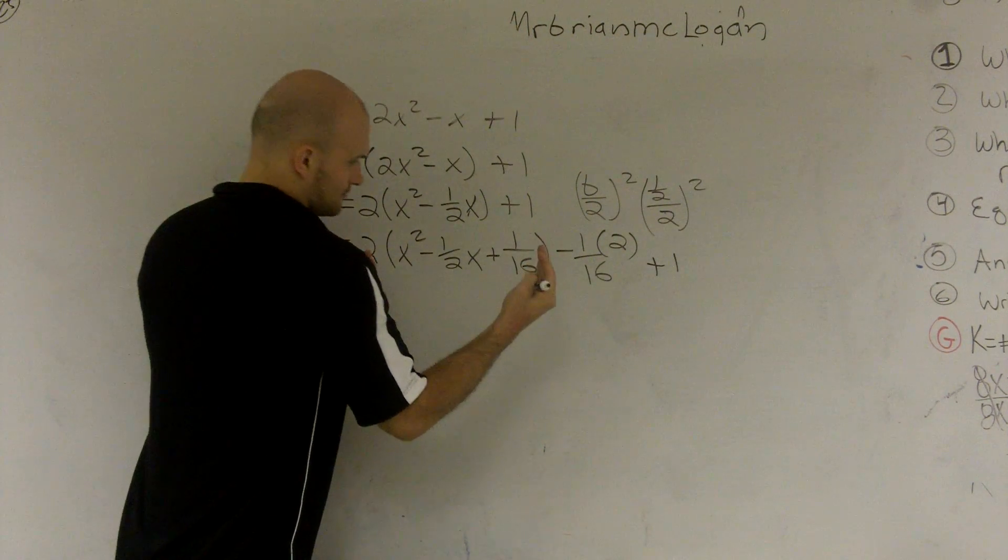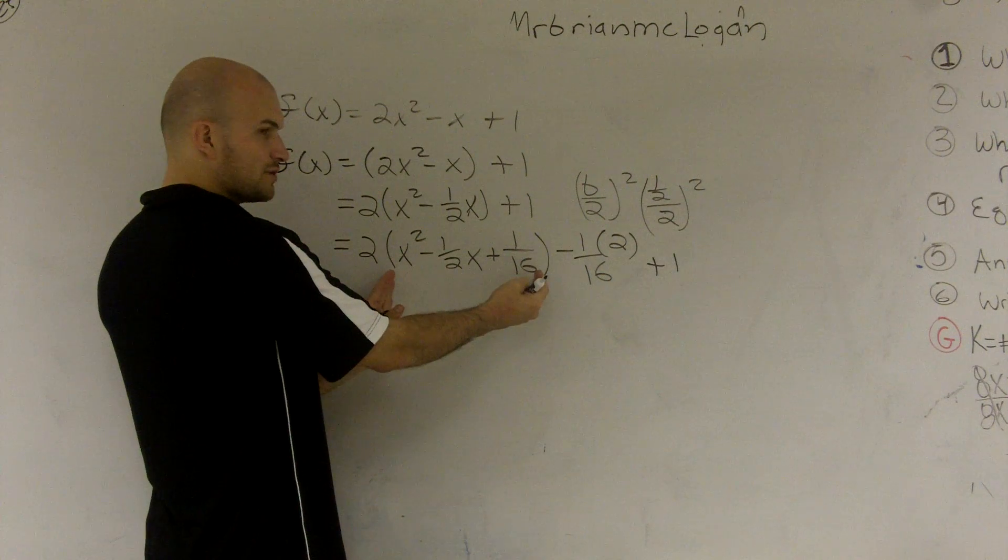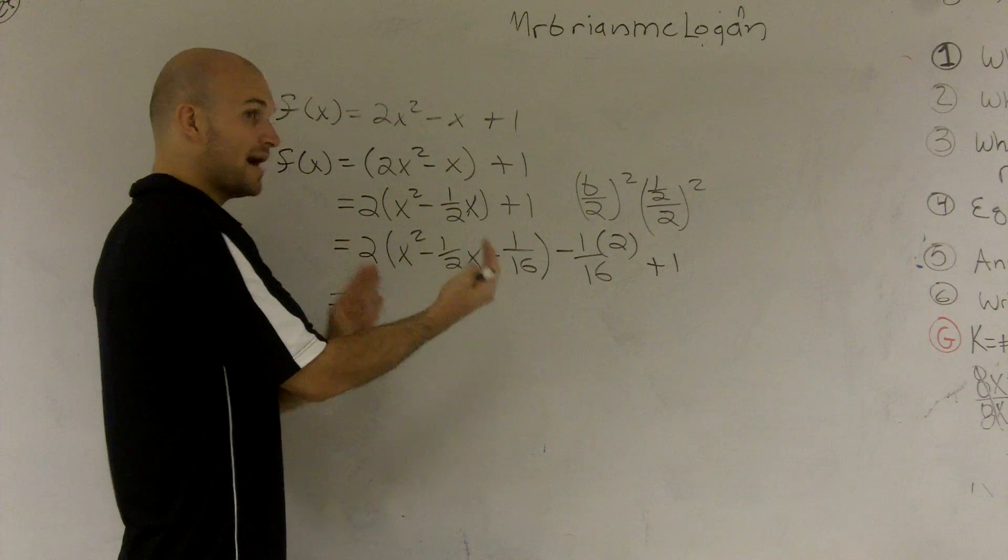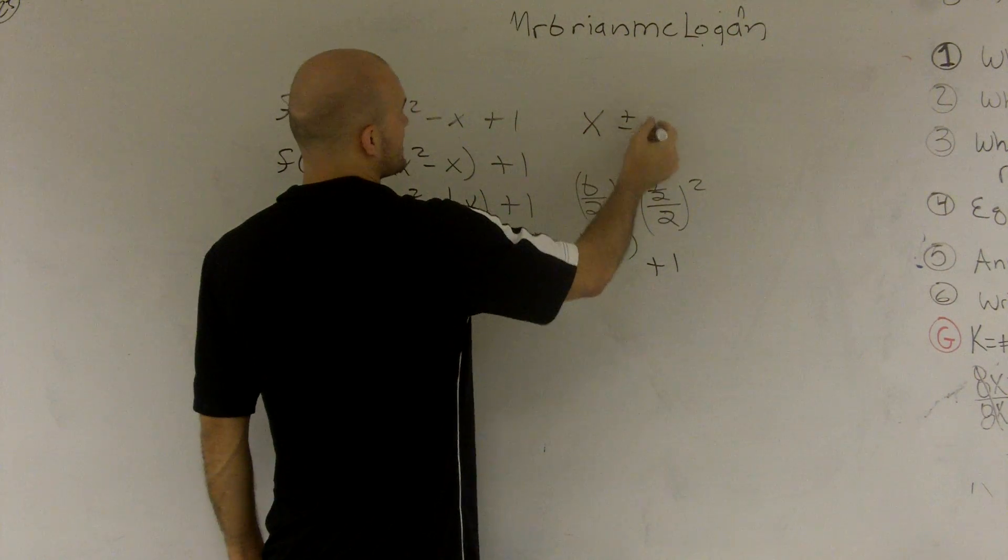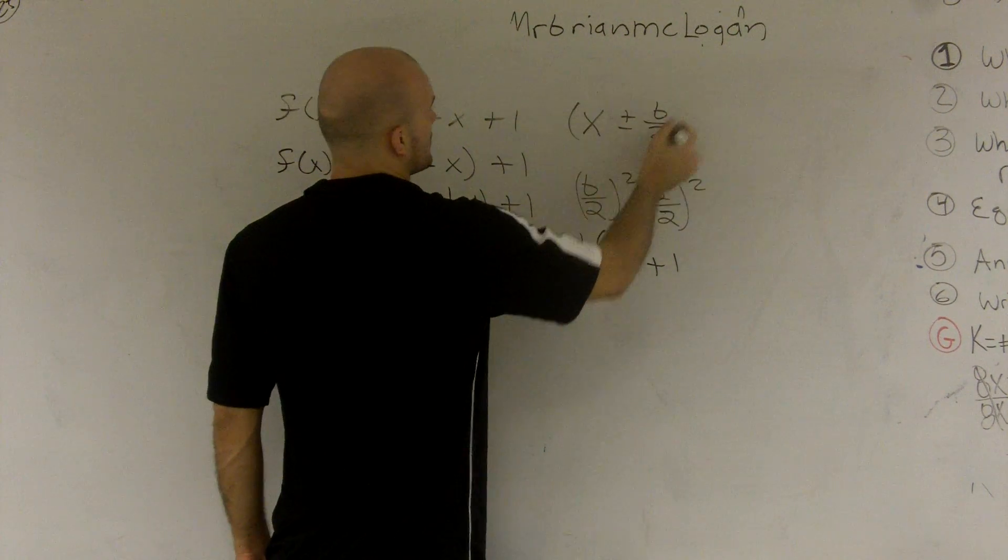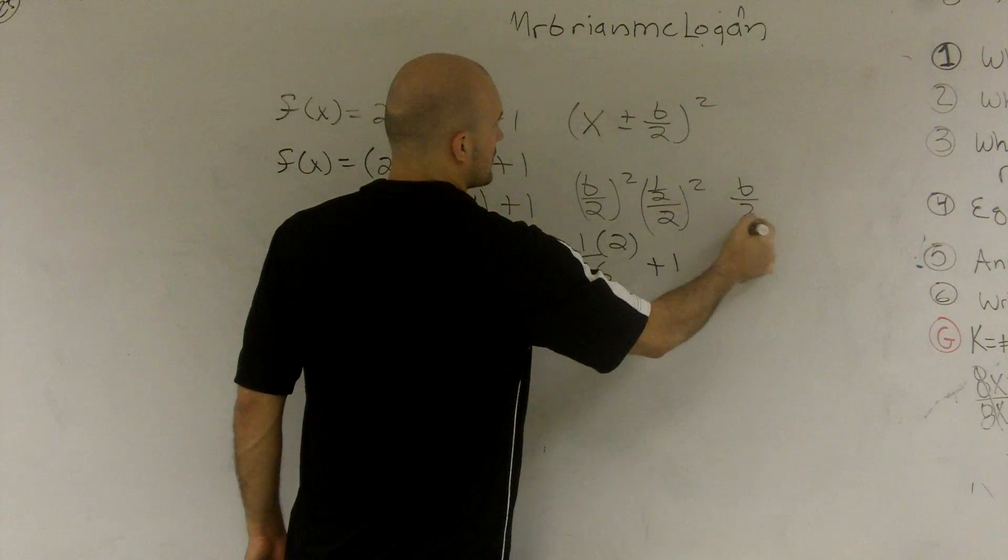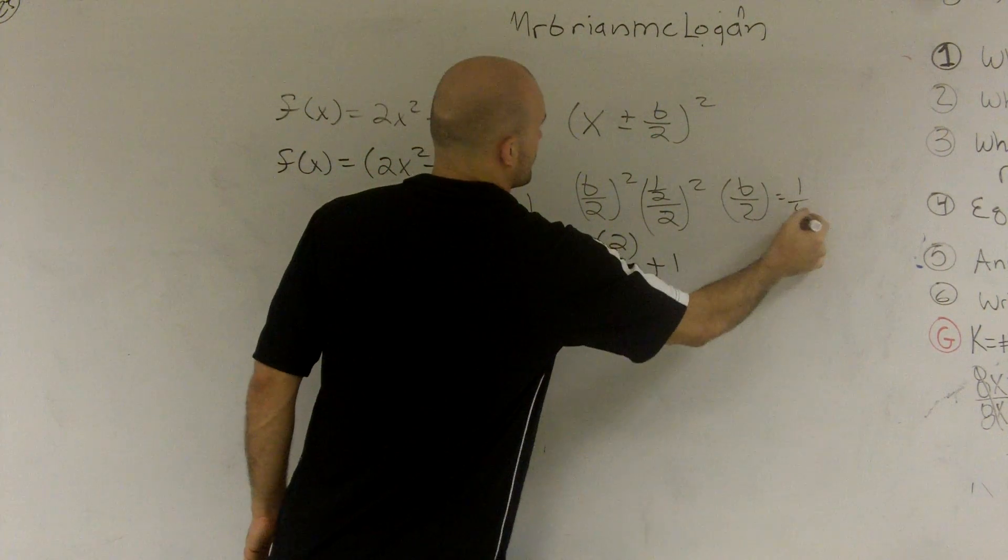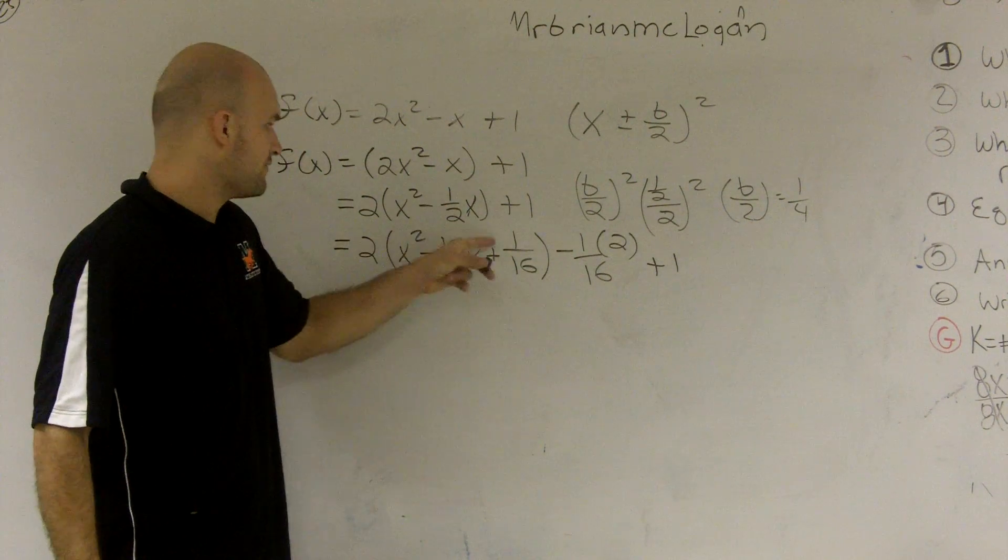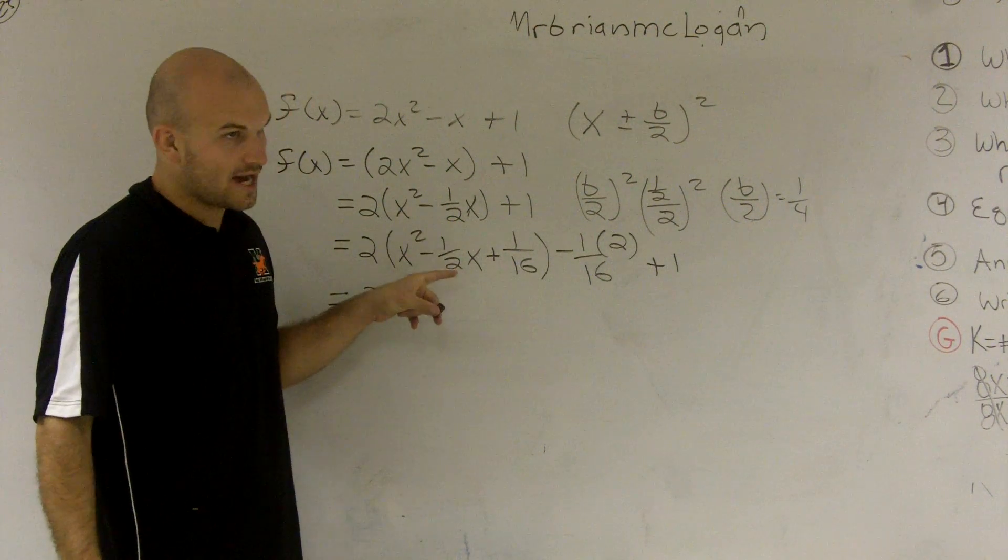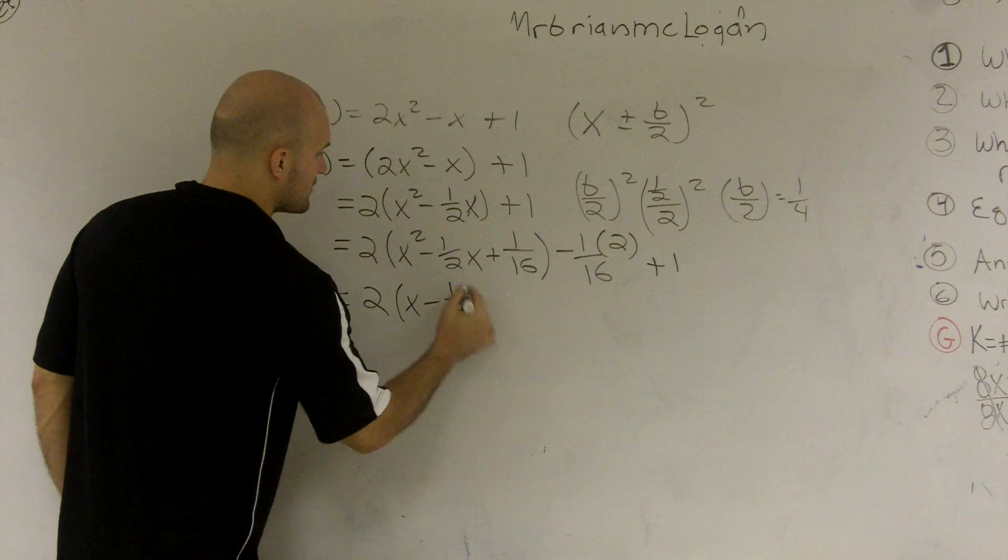So now I need to say, what is going to be, I need to make this into a perfect square trinomial, meaning I can write it as a binomial square. So remember that is x plus or minus b over 2 squared. Well, my b over 2 was 1 fourth. 1 fourth times 1 fourth is 1 sixteenth. But 1 fourth plus 1 fourth is not negative 1 half. So it has to be x minus 1 fourth squared.